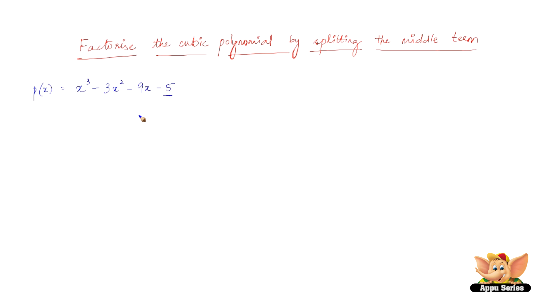Considering the number 5, the factors of 5 are plus or minus 1 and plus or minus 5. Now, by the trial and error method,